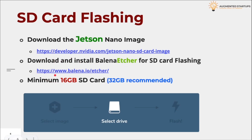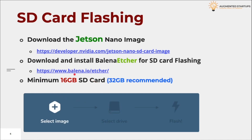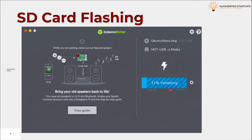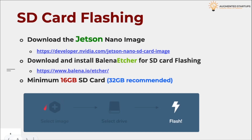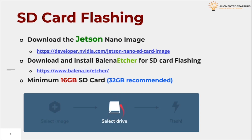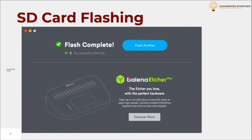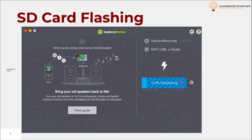Here is a quick animation of how the SD card flashing process works. A minimum of a 16GB SD card is required to flash the image, as the OS is around 9GB in size. However, it is better to use at least a 32GB SD card so you can save your project data and files in the future. In Balena Etcher, you select the downloaded image, then select the drive — the SD card already connected to your computer — and click the Flash button. The flashing starts, then validation begins, and then the process completes.